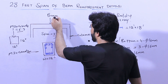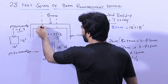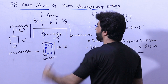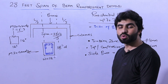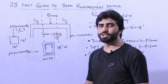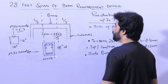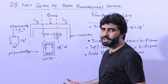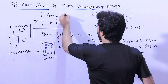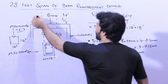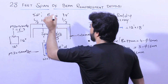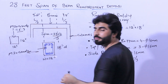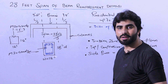Let me show a section. This is L divided by 3. Where L is 28 feet, 28 divided by 3 gives approximately 9.5 feet — you can say 9 feet 6 inches. So at the distance of 9 feet 6 inches we provide these 2 side bars.